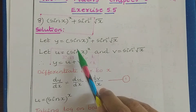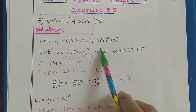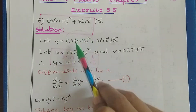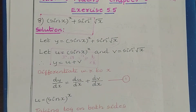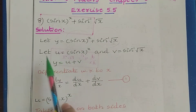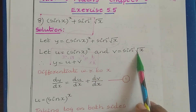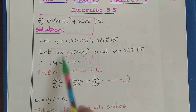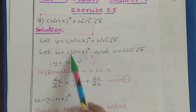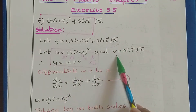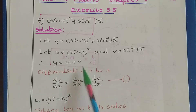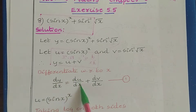First let us take this as y. We differentiate by dividing into two parts. The first part we take as u and the second function we take as v. So u = (sin x)^x and v = sin⁻¹(√x). Therefore y = u + v, and differentiating gives dy/dx = du/dx + dv/dx. Name this as equation 1.